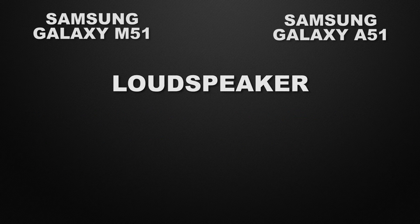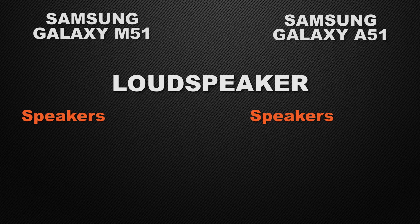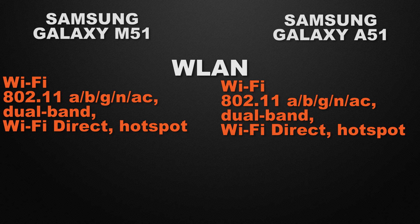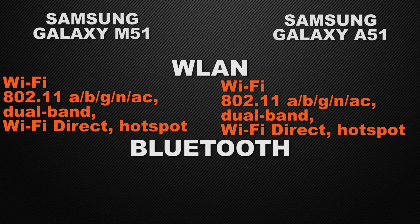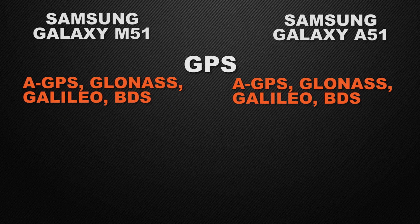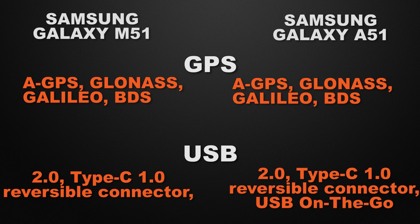Both devices have normal loudspeakers — a tie. Both have a 3.5mm headphone jack — a tie. For wireless LAN, both have dual-band Wi-Fi, Wi-Fi Direct, and hotspot — a tie. Both have Bluetooth 5.0 — a tie. Both have AGPS, GLONASS, GALILEO, and BDS GPS chips — a tie. For USB, the M51 has USB 2.0 Type-C reversible connector, and the A51 has USB 2.0 Type-C with USB On-The-Go, so A51 is the winner because of USB OTG.